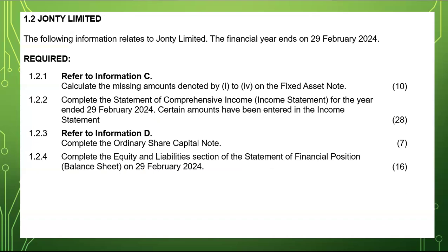For question 1.1, we are required to prepare the fixed asset note, then the statement of comprehensive income — the income statement — for the year ended 29th of February 2024. Certain amounts have been entered. We also need to complete the ordinary share capital note and the equity and liability section of the statement of financial position. As I'm reading this, I'm already imagining the statements.